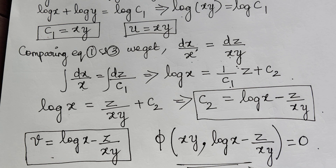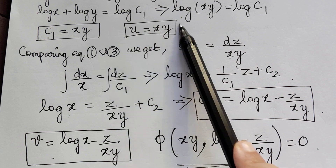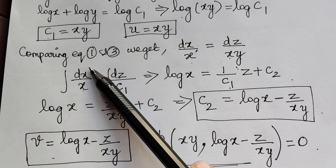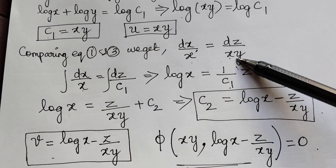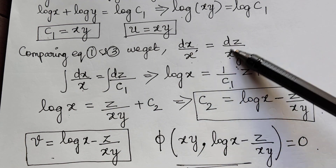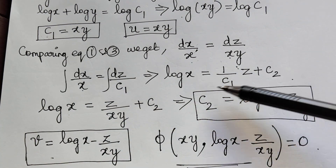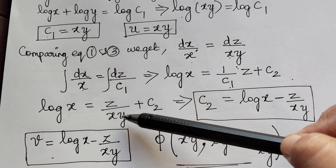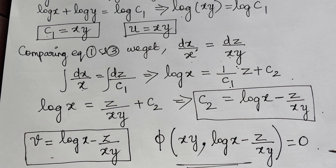This is a slightly different problem in Lagrange's linear partial differential equation. I compared equations 1 and 2 to obtain the first solution. When comparing 1 and 3, and 2 and 3, I could not arrive at a solution because of different variables — dz by y. So I substituted xy from the first solution as c1, integrated, then replaced c1 by xy to obtain the final solution. Hope you have understood. Thank you.